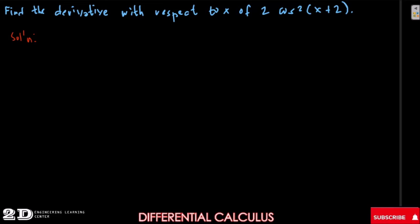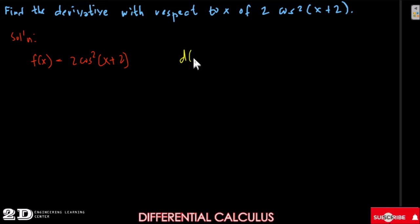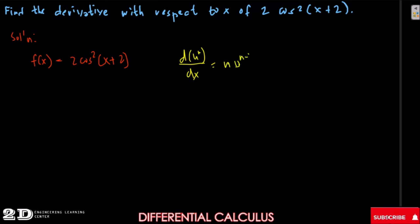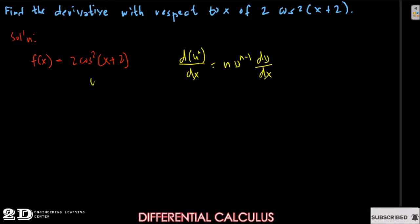This problem will be involving the power formula, u to the n. So our f of x is equal to 2 cosine squared of x plus 2. The formula we're using is: d/dx of u to the n equals n times u to the n minus 1 times du/dx. Our u here is cosine x plus 2, which is raised to the power of 2.